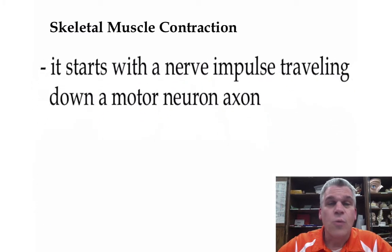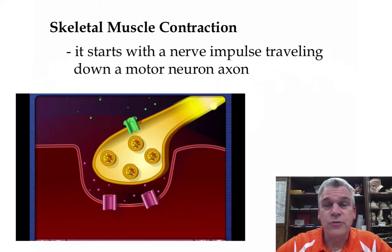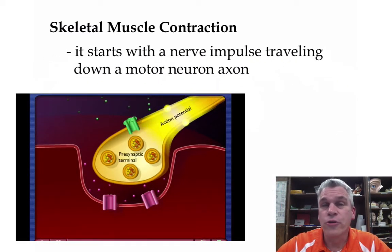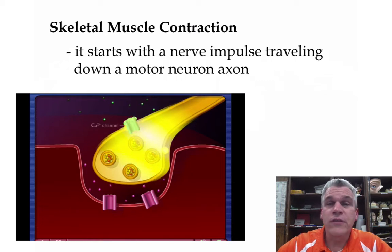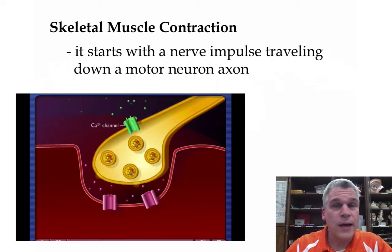First off, we need to have a nerve impulse. This will travel down a motor neuron axon. Without this nerve impulse, the muscle will never be able to contract.